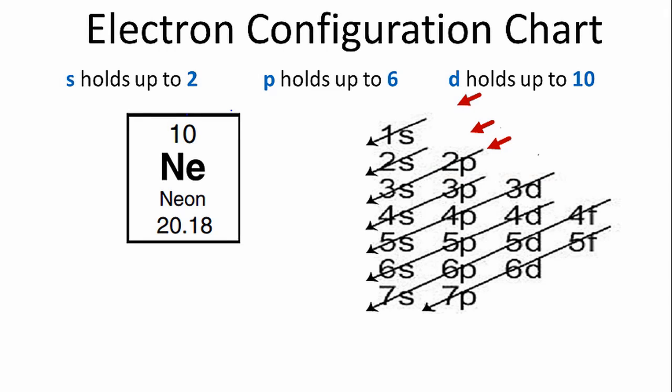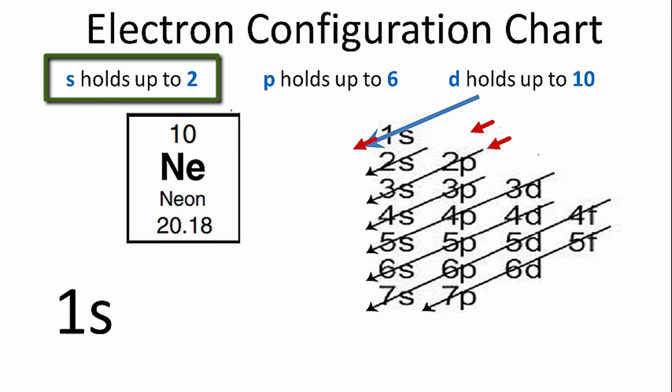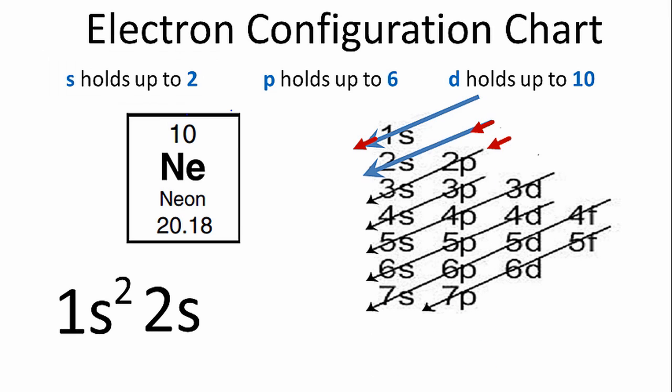We'll start with the chart on the right. We'll go down the first row, 1s, so we'll write 1s. We know that s orbitals can hold up to 2 electrons, so we'll put a 2 after the 1s. We'll go down the next row, the 2s, which can also hold 2, and we've used 4 electrons so far.